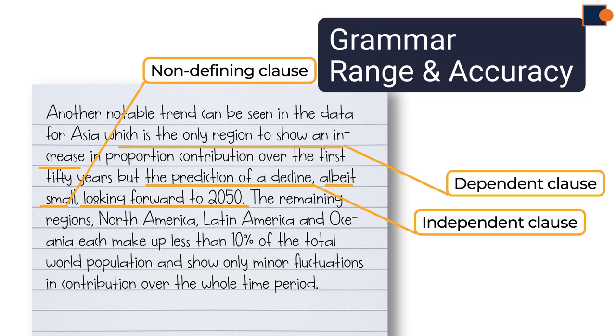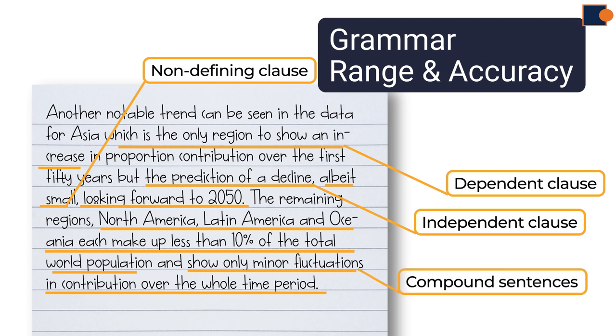Albeit small is non-defining clause. The next idea contains compound sentence. North America, Latin America, and Oceania make up less than 10% of total world population, and show only minor fluctuations. So these are two independent clauses.